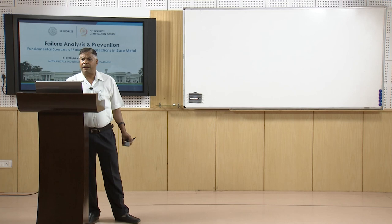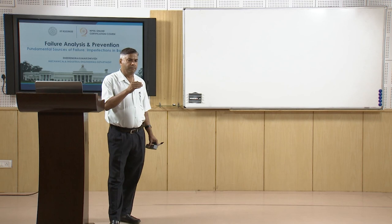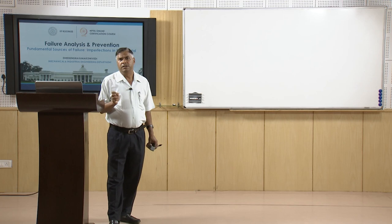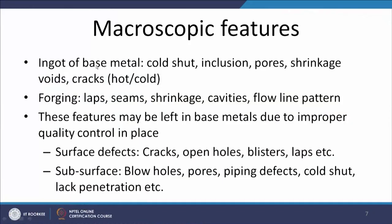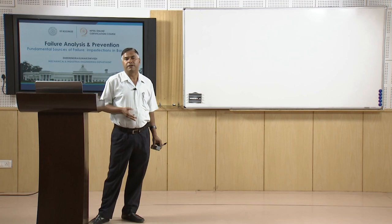Coming to macroscopic features normally present in base metals: base metals are produced through two routes — as-cast in the form of ingots or billets, or further rolled down to thinner sections like plates and sheets. When base metal is produced by casting, defects may include cold shots, inclusions, pores, shrinkage voids, etc. If the base metal has these discontinuities, they can become sources of fracture or failure in the manufactured product.